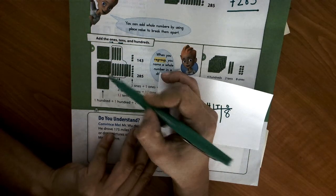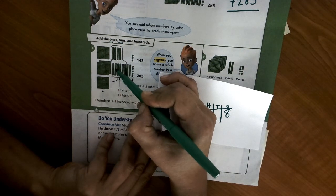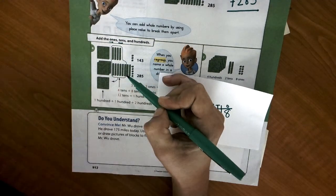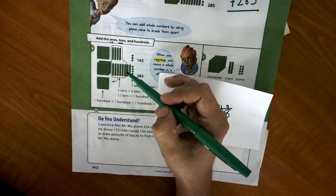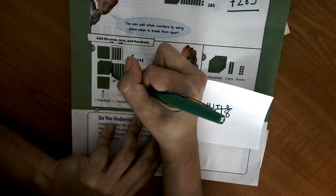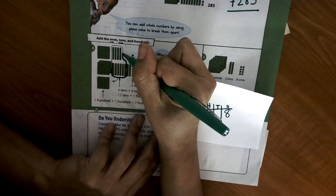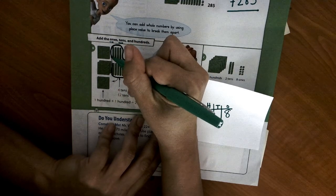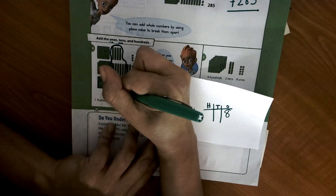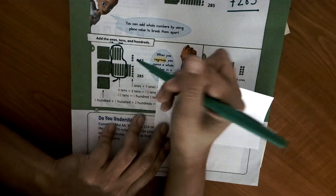So let's count all of our tens. 1, 2, 3, 4, 5, 6, 7, 8, 9, 10, 11, 12. We have 12 tens right here. Did you hear that magic number? 10. And once we get 10, we can take 10 tens and regroup them and they become a hundred. So now those 10 tens became a hundred. So now I only have 2 tens left.